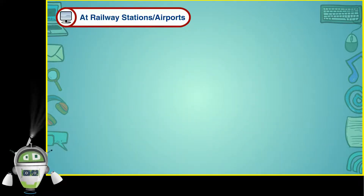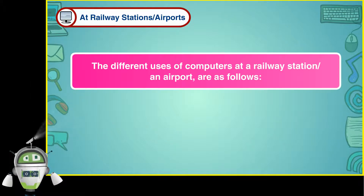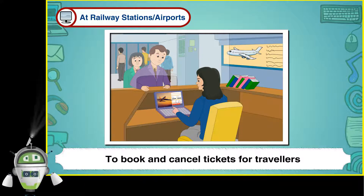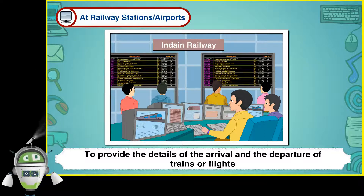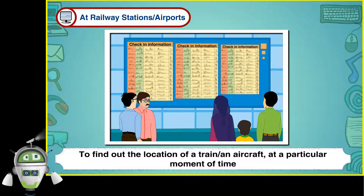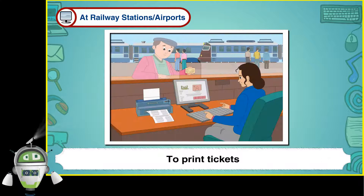At railway stations or airports, the different uses of computers are as follows: to book and cancel tickets for travellers, to provide the details of the arrival and departure of trains or flights, to find out the location of a train or an aircraft at a particular moment of time, and to print tickets.